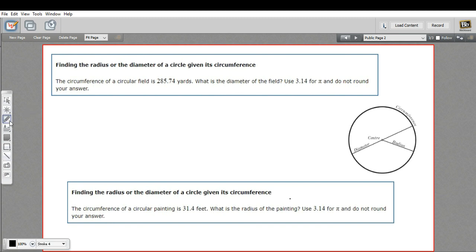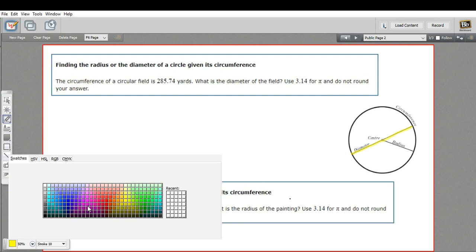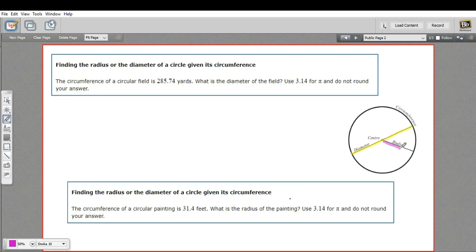Just to review, the diameter of a circle is that line that goes all the way across the circle through the center. And a radius of a circle is half of that. So half of a diameter is a radius. It just goes from the center of the circle out to the edge of the circle.